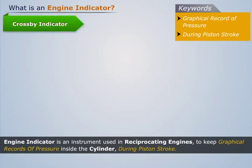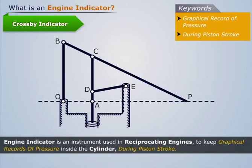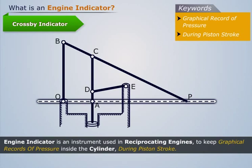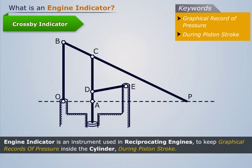Cross-by indicator. Its line diagram is a modified form of the pantograph copying mechanism. The modification is done in such a way that the point at which the recording device is attached, that is point P, lies on the straight line joining the pivot point O and point A over the piston rod, so that the velocity ratio between points P and A becomes constant.